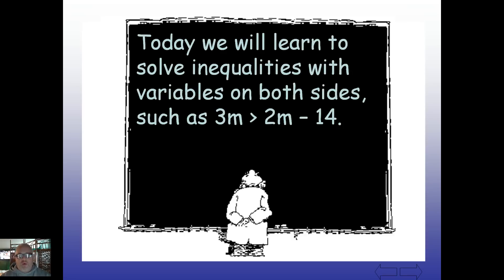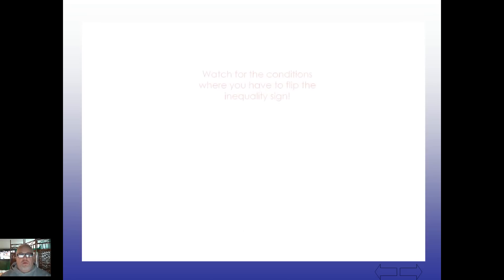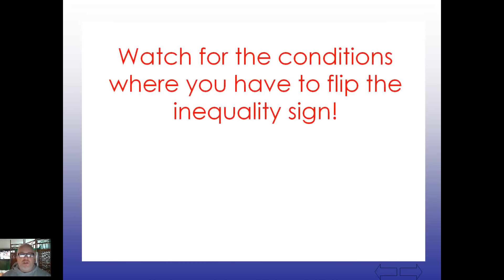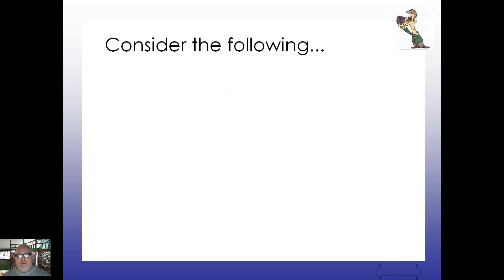Today we will learn to solve inequalities with variables on both sides, such as 3m is greater than 2m minus 14. All right, let's see. So watch for the conditions where you have to flip the inequality sign. Let's see what we can do.